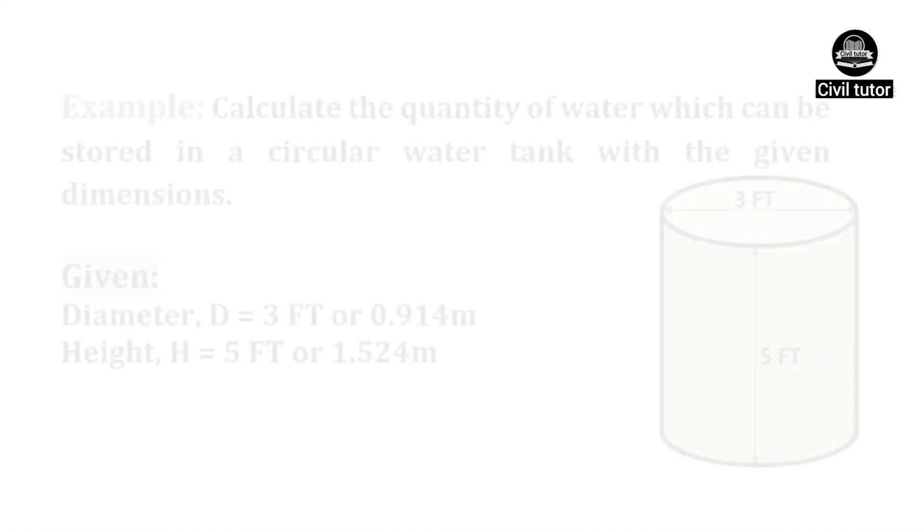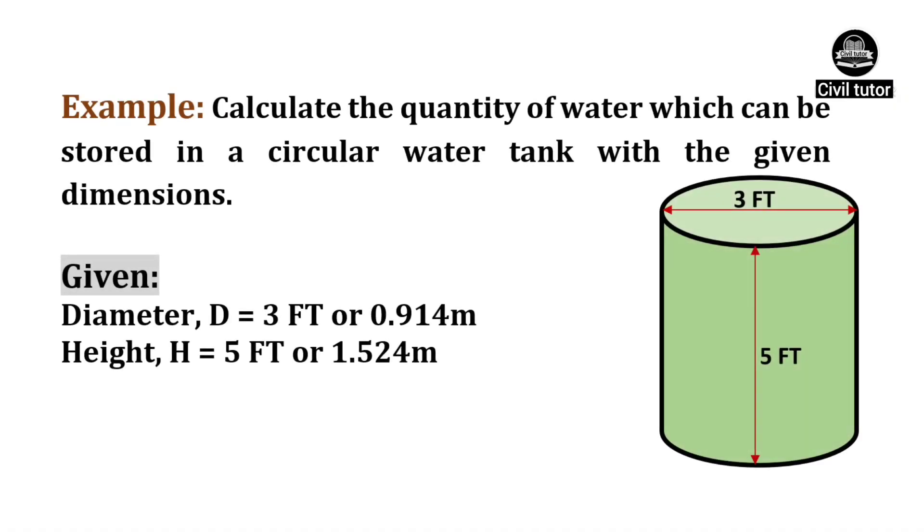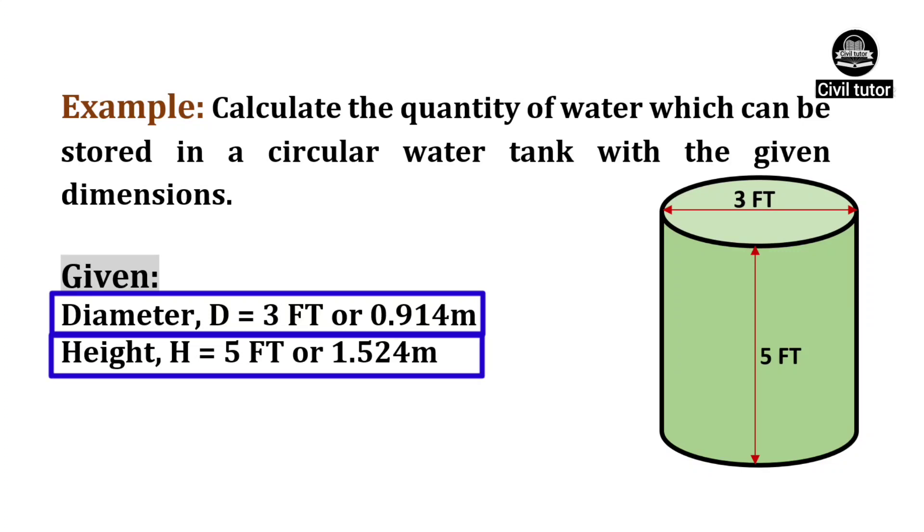To make it easy for you, let's quote an example in which we need to calculate the quantity of water which can be stored in a circular water tank with the given dimensions. The diameter of this tank is given as 3 feet or 0.914 meter. The height of this tank is given as 5 feet or 1.524 meter.